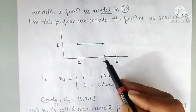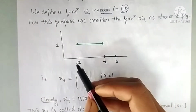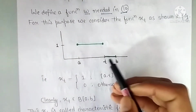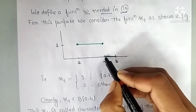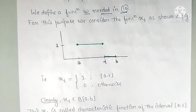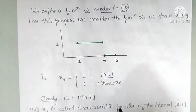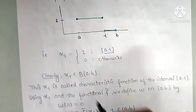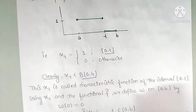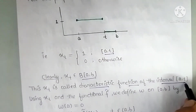Look at the graph of x_t. From a up to t, the function value is 1 — so x_t(s) = 1 for s ∈ [a, t]. After t, the value drops to 0. So x_t(s) = 1 when s ∈ [a, t], and x_t(s) = 0 otherwise. This x_t belongs to B[a,b] and is called the characteristic function of the interval [a, t].